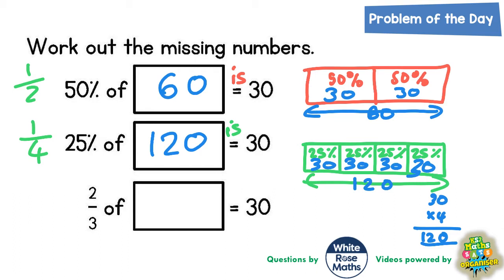And again we can use a bar model strategy for the last one. So two thirds of a mystery number is 30, so let's do another bar. So there's the bar and we do with thirds this time, so this time we want three pieces to our bar.